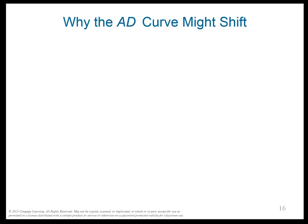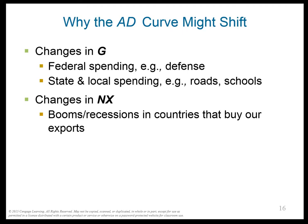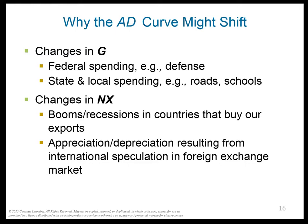Changes in investment might come from firms buying new computers, expectations about the future, interest rates, monetary policy, or investment tax credits. Government spending changes come from federal, state, and local spending. Changes in net exports can come from booms or recessions in countries that buy our exports — for example, if Canada gets richer, they'll buy more of our exports — or if the real exchange rate changes.